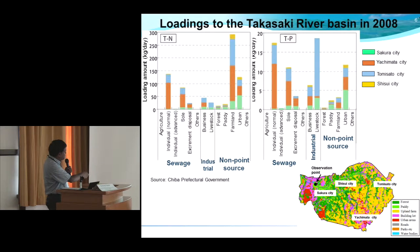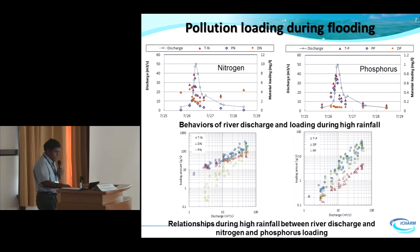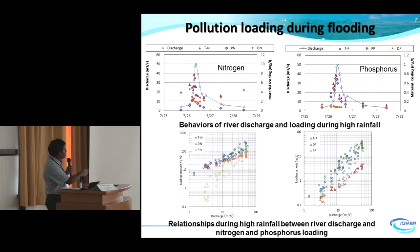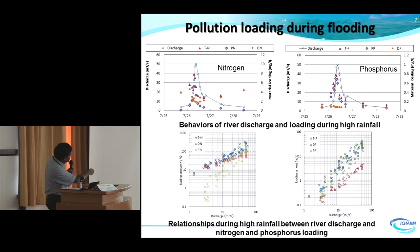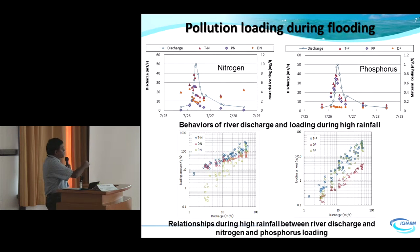The Chiba agricultural government, where this lake is located, developed a loading graph for 2008. As mentioned, non-point sources are very dominant during rainfall events. These figures illustrate how pollutants are mobilized during a rainfall event: with increasing river discharge, the nitrate and phosphate loadings also increase, demonstrating that this kind of phenomenon is mainly caused by non-point sources.